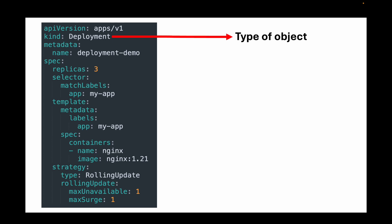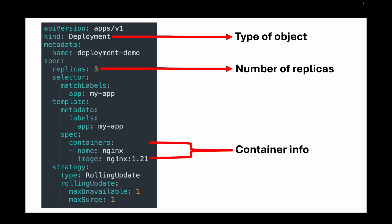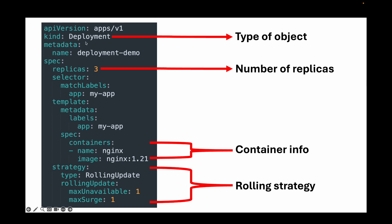Here is an example deployment. We specify the kind as Deployment, define replicas as three — same as the replica set — but here we also define a rolling update strategy. This feature is not available in replica sets. The deployment manages the rollout of nginx image version 1.21 while ensuring at least two pods remain available during the update. MaxUnavailable is set to one, so only one pod can go down at a time out of three.